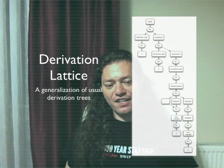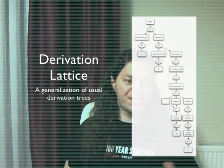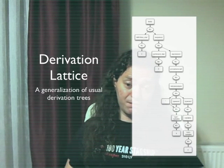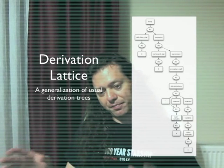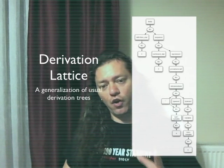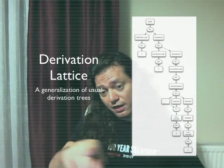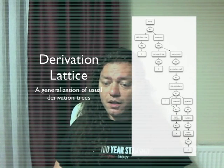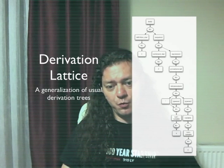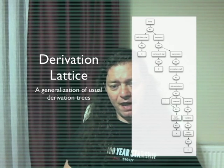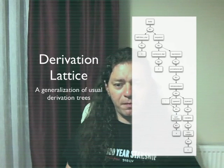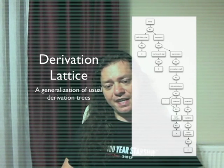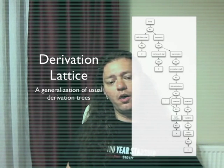The derivation lattice data structure in the paper is a simple generalization of usual derivation trees in language theory. Instead of a simple tree, I'm using a bipartite directed graph because I'm using different kinds of nodes for sentences and productions. A body gets expanded into a definition story and sequence by application of production rule R1, and the more free structure of the derivation lattice allows us to represent the conditional dependencies in the derivation of a context-sensitive grammar.